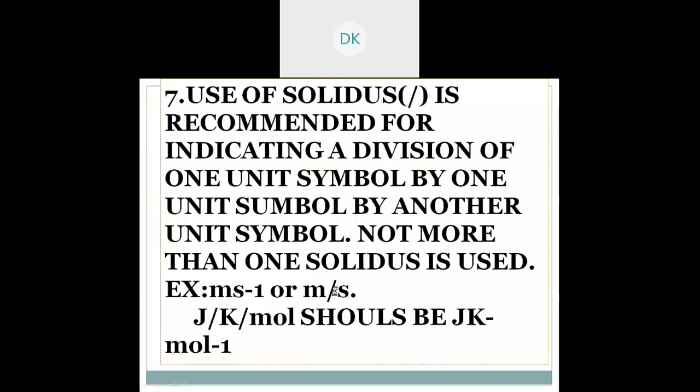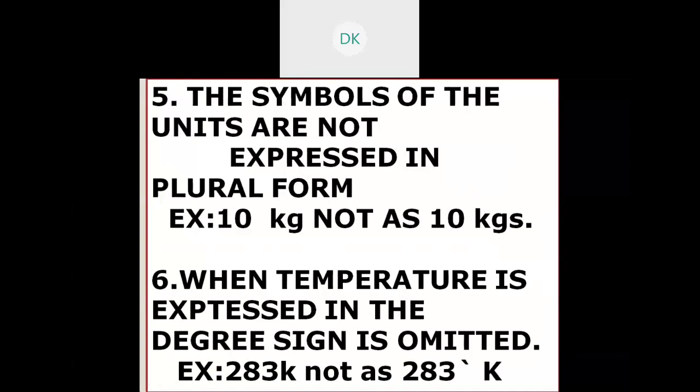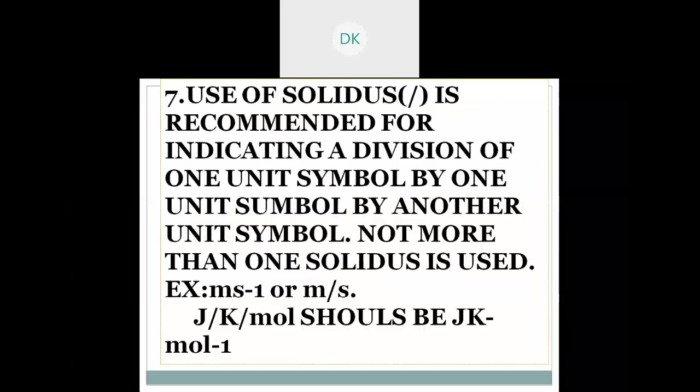Sixth rule: when temperature is expressed in the degree, sign is omitted. You know there are three ways to measure temperature: Kelvin, Celsius, Fahrenheit. In Celsius and Fahrenheit we will use a degree sign, but in the case of Kelvin we will not use it. Why? Because even if not represented, it will equal to degree of Celsius or Fahrenheit. That is why degree sign is not used in Kelvin. In Kelvin, degree sign is omitted.